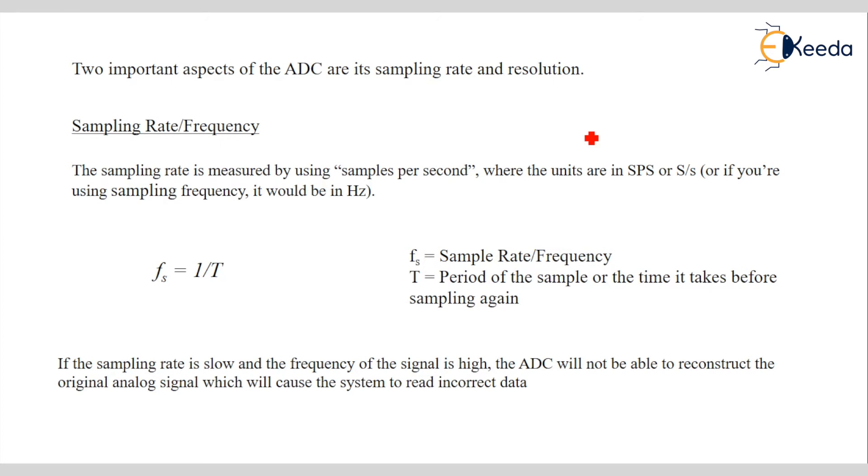The sampling rate is measured by using samples per seconds where units are in SPS or if we have sampling frequency it would be in Hertz. Samples per seconds may know the frequency is equal to 1 upon time. Here SFS is a sample rate or frequency. The T is a period of sample or time taken by ADC for the conversion.